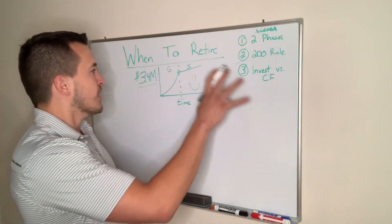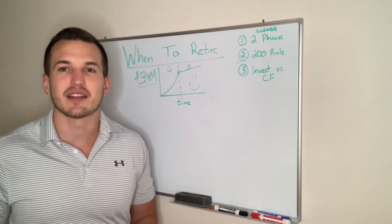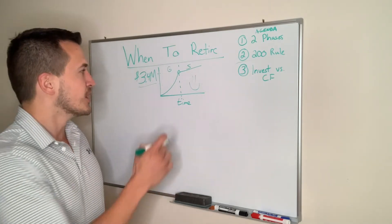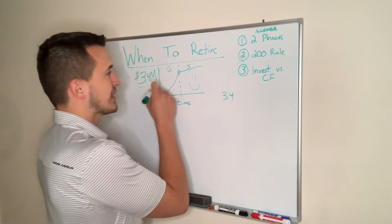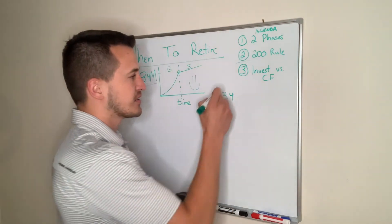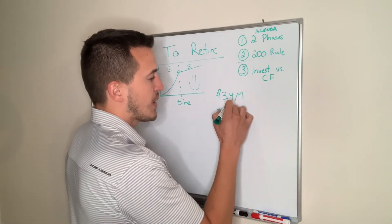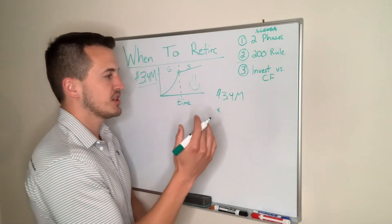First things first, 3.4 million can seem very intimidating. Let's just look at what that takes and why that number is there. If you look at 3.4 million, in this example that's assuming that it's all in stocks. If you have 3.4 million, and let's say you had all of that invested in the S&P 500, which averaged around 10% return a year over the last 140 years.